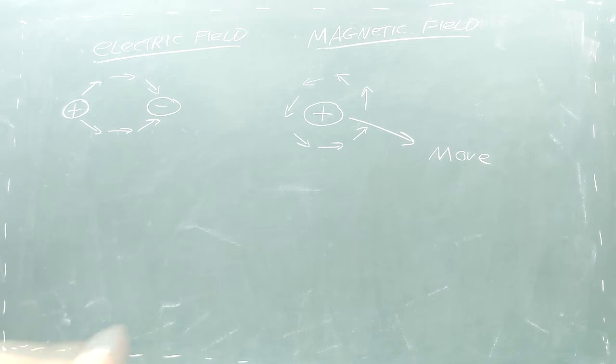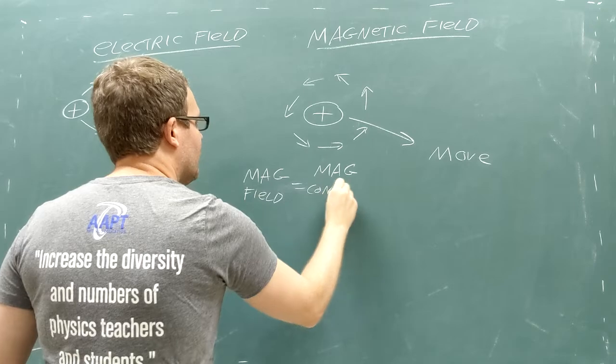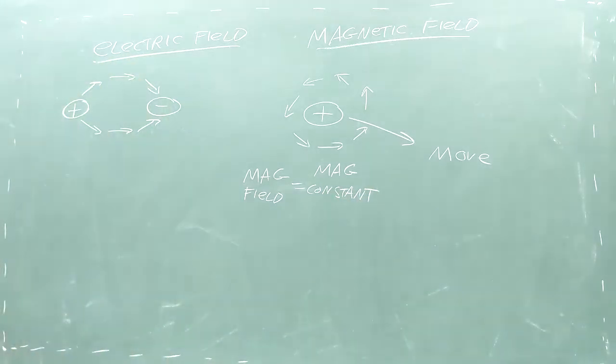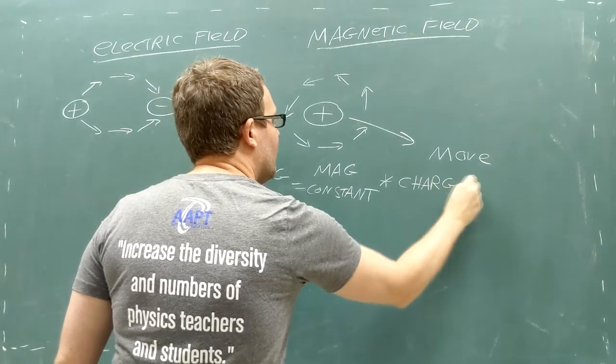The equation for the magnetic field created by a single charged particle is similar to the equation for the electric field. First, there's a magnetic constant that's the same everywhere in the universe. Next comes the particle's charge.